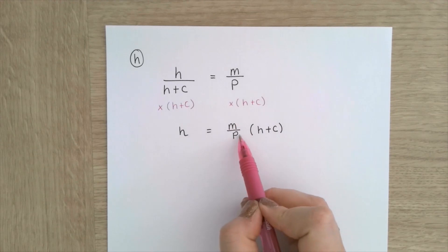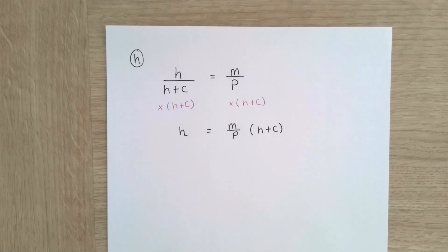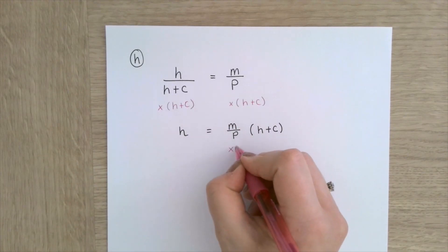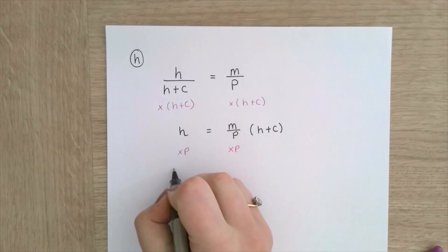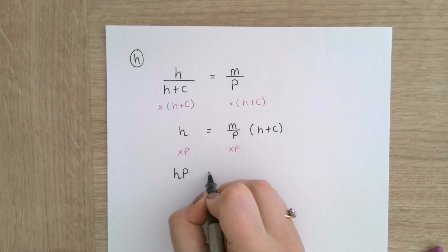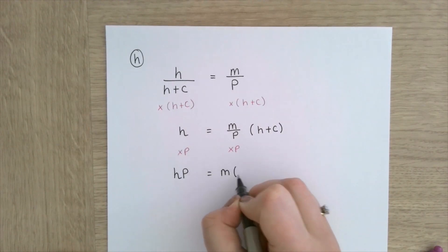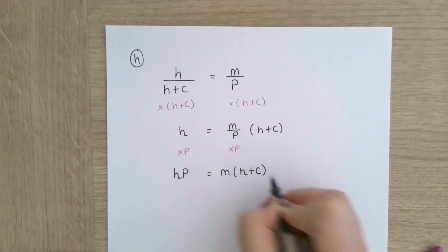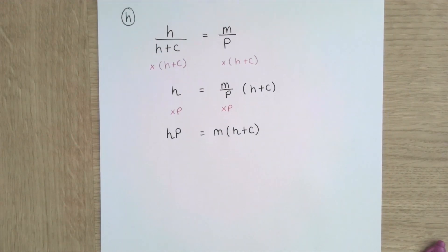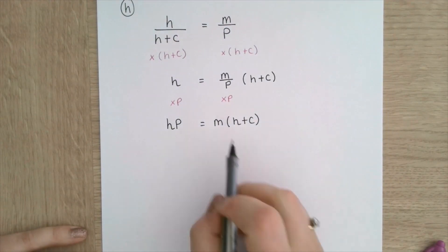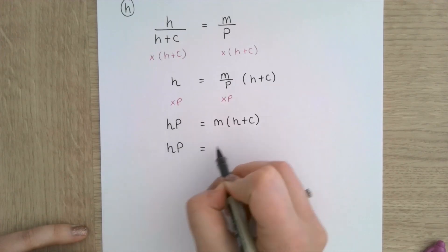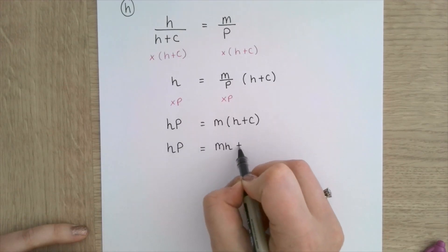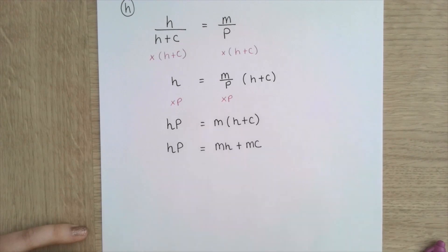So what I now need to do is get rid of this denominator of p. So I'm going to multiply both sides by p, ending up with hp is equal to m brackets h plus c. I think you know what I'm going to do next — I'm going to expand these brackets. So hp equals mh plus mc.